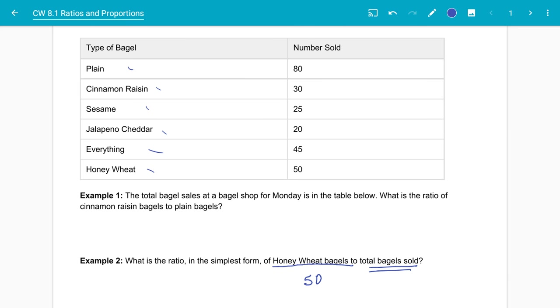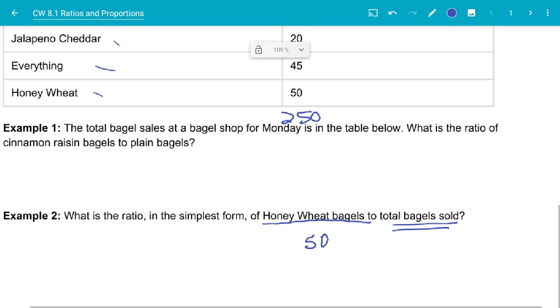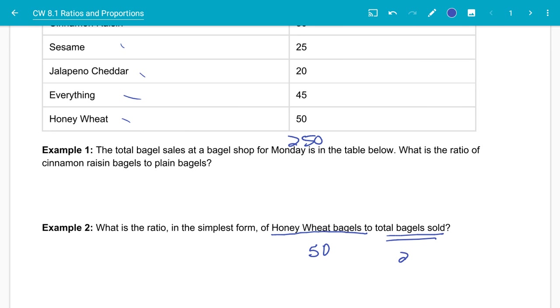So I'm going to say 80 plus 30 plus 25 plus 20 plus 45 plus 50. All of that equals 250. So we sold 250 bagels and we sold 50 honey wheat bagels.